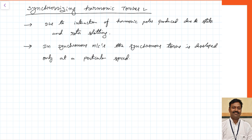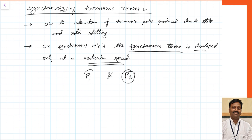Now, in a synchronous machine, the name synchronous torque comes because the torque will be produced only at a particular field. In the case of a synchronous machine, there will be a particular number of stator poles and a particular number of rotor poles. The interaction of the stator poles and the rotor poles produces a common speed at which it rotates — we call that speed the synchronous speed Ns. It will only rotate at synchronous speed; it does not rotate at any other speed.